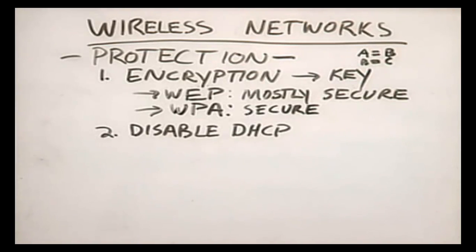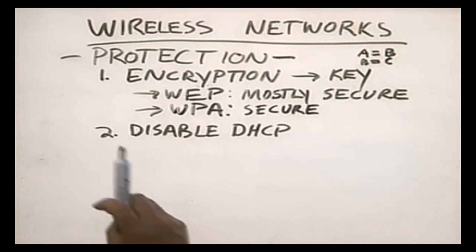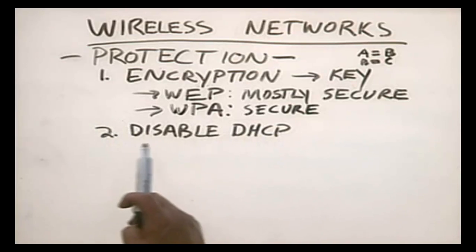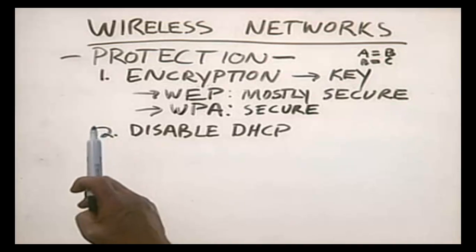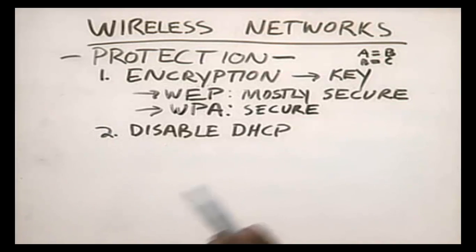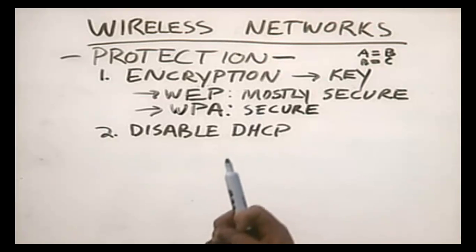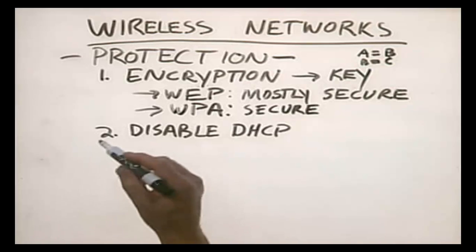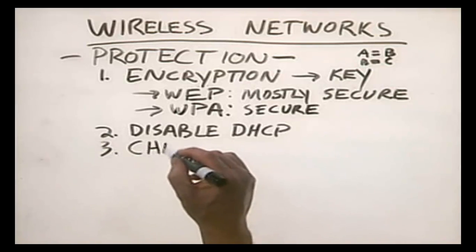With DHCP disabled, an outside person trying to get into your network has to figure out what IP addressing scheme you're using, what your subnet mask is, what your gateway server address is, and what your DNS server address is. If they don't have that information, it's very unlikely they can determine it on their own — adding a layer of security. However, this also means you'll have to manually configure all your wireless workstations with static IP addresses, subnet masks, gateway addresses, and DNS server addresses.